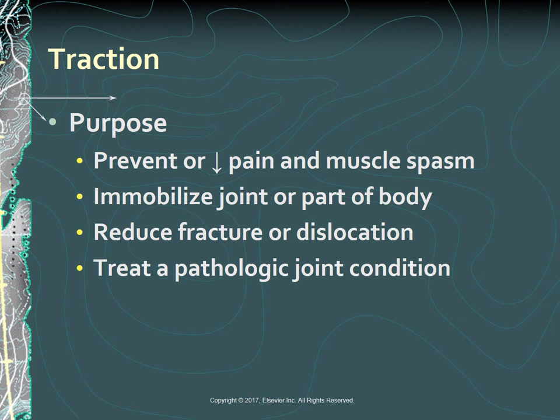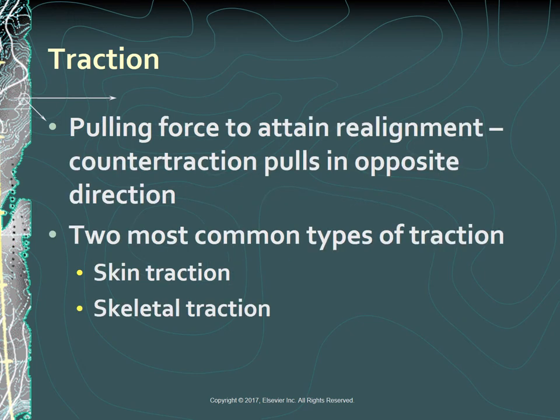Traction is used to prevent or reduce pain and muscle spasm, for example in whiplash or unrepaired hip fracture. It immobilizes a joint or part of the body, reduces a fracture or dislocation, and treats a pathological joint condition like a tumor or an infection. Traction devices apply a pulling force on the fractured extremity to attain realignment while countertraction pulls in the opposite direction. The two most common types of traction are skin traction and skeletal traction.